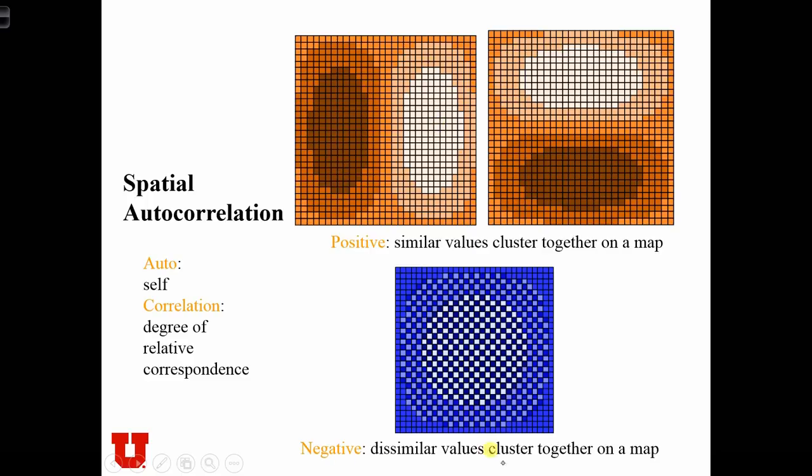In negative autocorrelation, this refers to map patterns which are the uniform or dispersed kinds of map patterns that we were dealing with earlier with point pattern analysis. Here we see that high and low values are interspersed rather evenly across the map.